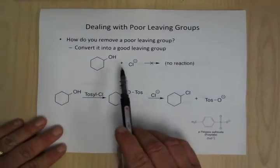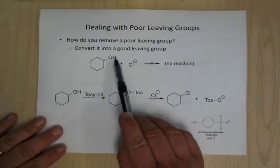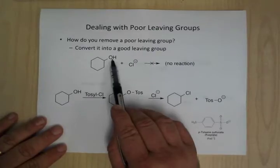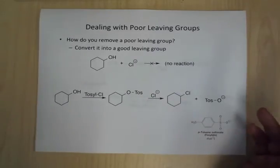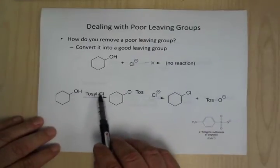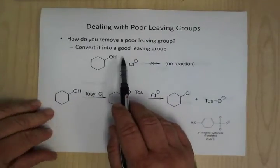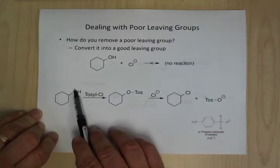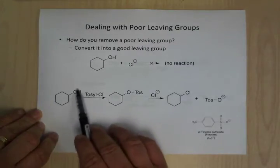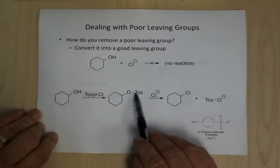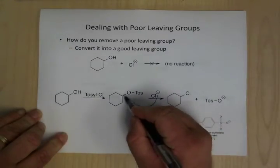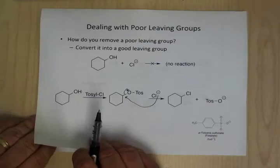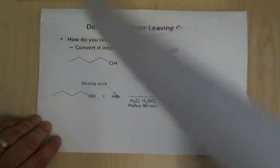The problem is, if you wanted to swap out an OH for a Cl — OH is a really bad leaving group — if you just mixed these two together, nothing would happen. So what you need to do is convert a poor leaving group into a good one. You can react it with tosyl chloride to turn an OH into an O-tosylate, which is a really good leaving group. Now the nucleophile can come in and displace it, and you end up with your product. You sort of cheat — you turn a bad leaving group into a good one.